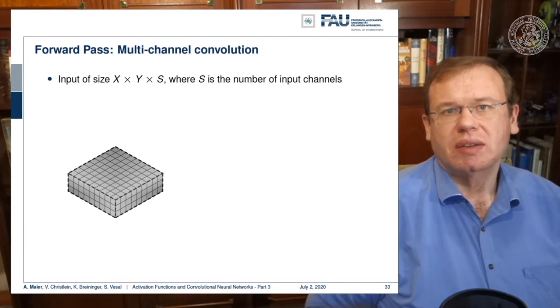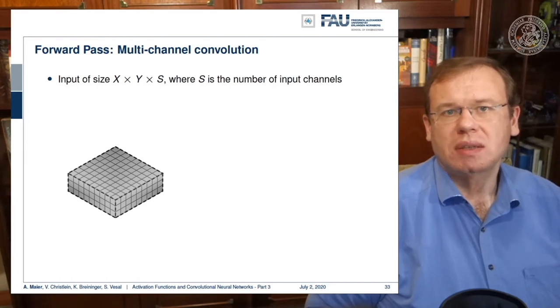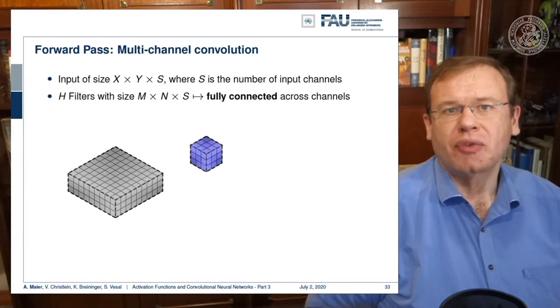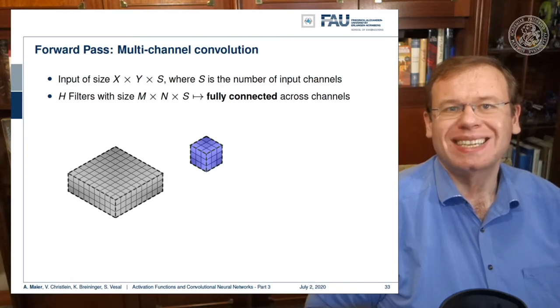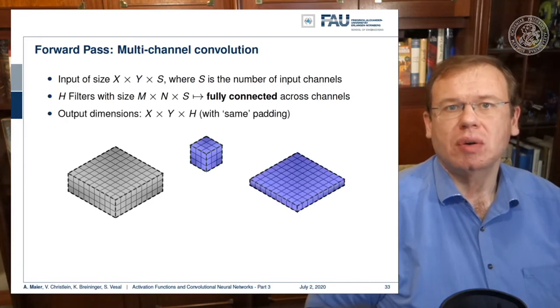This way you can get the forward pass. You actually don't have to implement it with the small convolution kernels; you can also use a Fourier transform to perform the convolution. You have a 2D input image, let's say it's multi-channel where, for example, s is the number of colors. Then you apply a 3D filter. Here you can see in the spatial domain you have the convolution kernel, but in s direction it's fully connected across the channels.